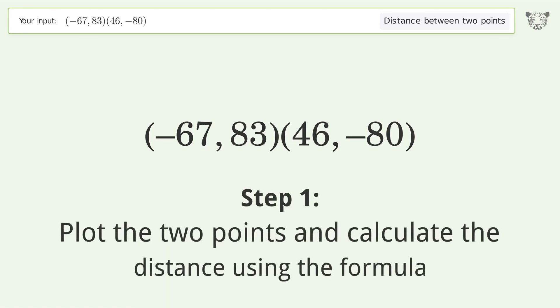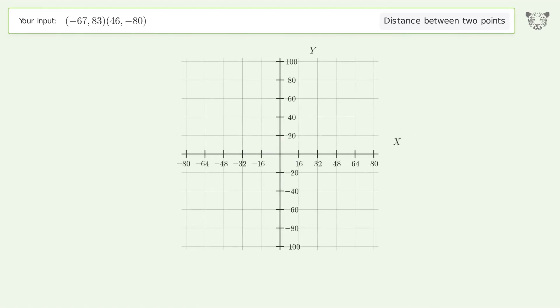Step 1: Plot the two points and calculate the distance using the formula. The coordinates of Point 1 are x1 equals negative 67 and y1 equals 83. The coordinates of Point 2 are x2 equals 46 and y2 equals negative 80.